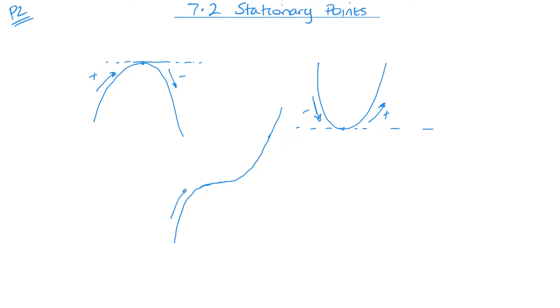With the point of inflection I get a positive gradient followed by a positive gradient, or it can have a negative gradient followed by a negative gradient. So this is what we're looking at: maximum, minimum, and then point of inflection.